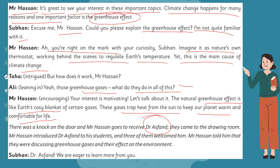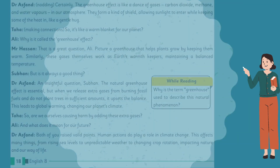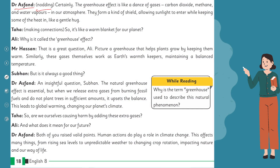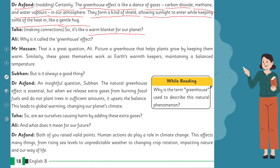Dr. Ashwan came to the drawing room. Mr. Hassan introduced Dr. Ashwan to his students, and all three welcomed him. Mr. Hassan told him they were discussing greenhouse gases and their effect on the environment. Subhan says: 'Dr. Ashwan, we are eager to learn more from you.' Dr. Ashwan, nodding, says: 'The greenhouse effect is like a dance of gases — carbon dioxide, methane, and water vapor — in our atmosphere. They form a kind of shield, allowing sunlight to enter while keeping some of the heat, like a gentle hug.' Taha, making connections, says: 'So it's like a warm blanket for our planet!'